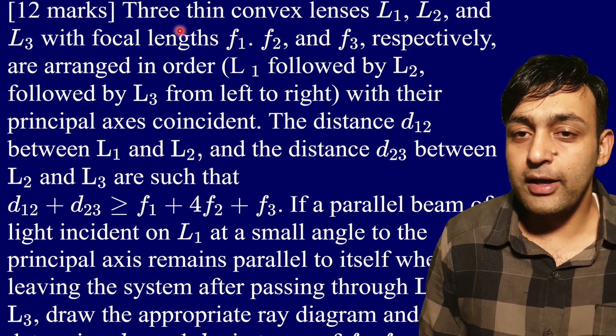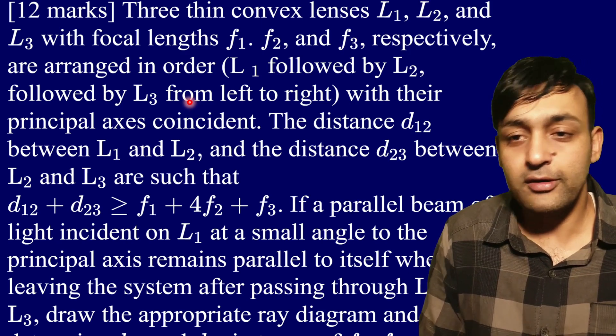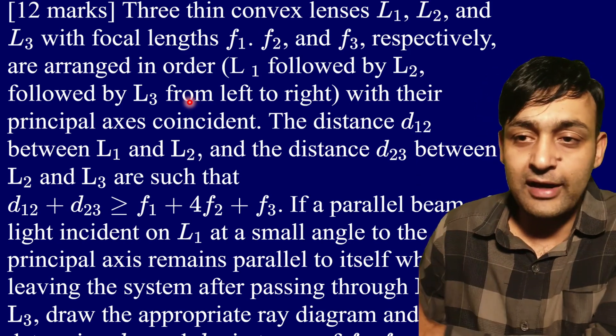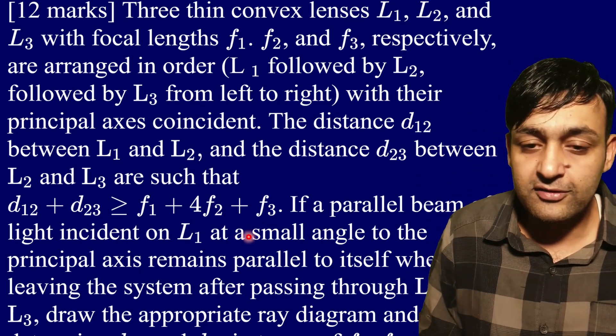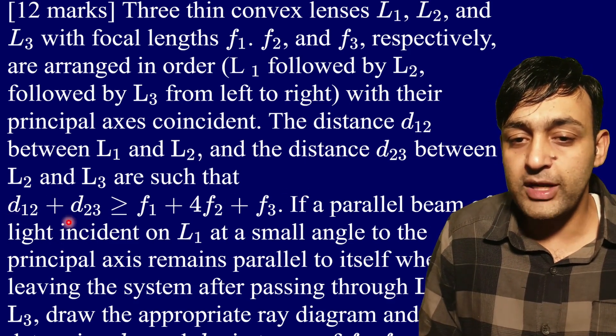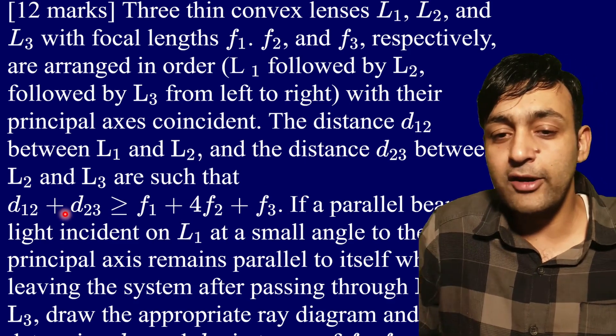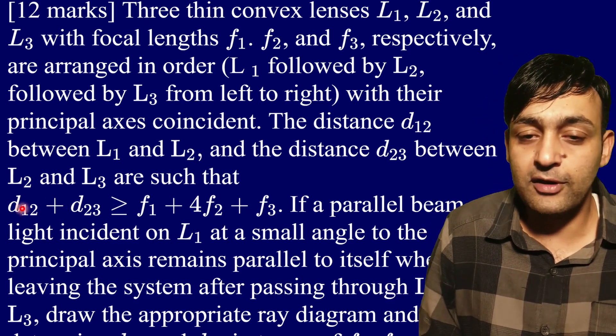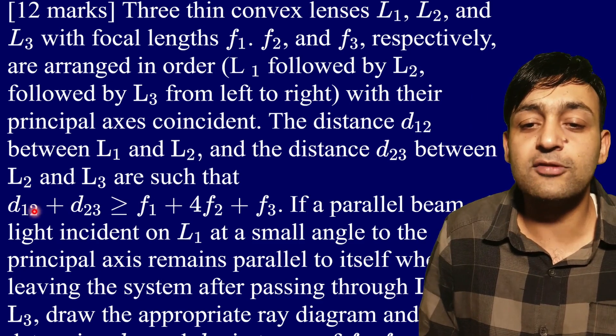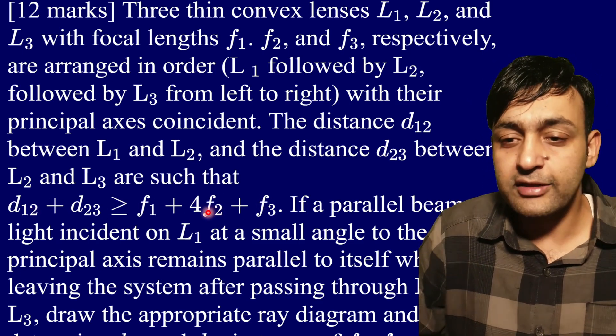If you are watching it for the first time, it has three lenses arranged in order - L1, then L2, then L3 - separated by distances d12 and d23. There is this very good inequality and we had also discussed in detail about the significance of this inequality, so we are not going to do that in this video.